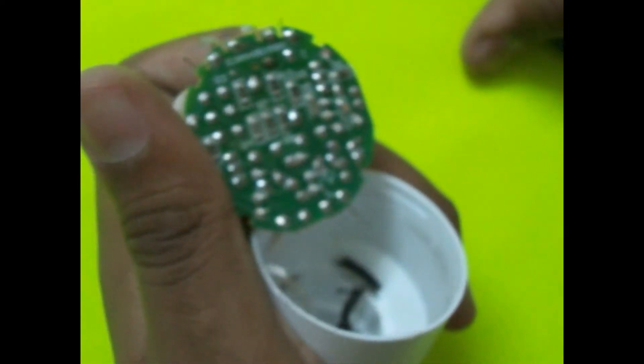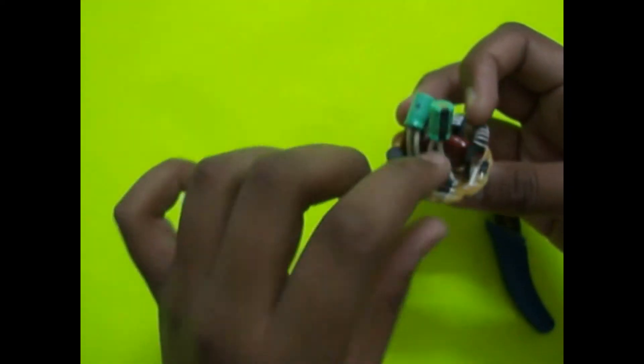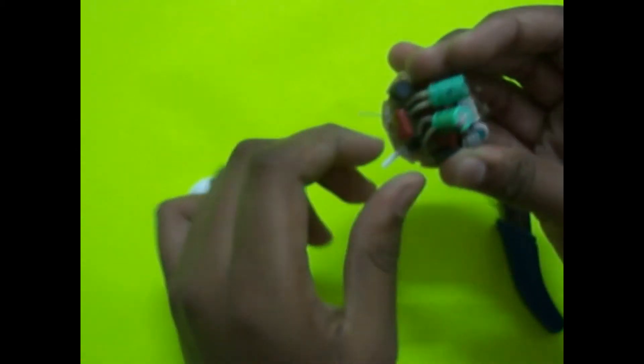Inside a CFL you will find a printed circuit board with many useful parts like capacitors, diodes, transistors, a transformer, and a ferrite toroid core, which can be salvaged.